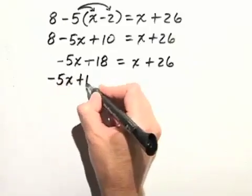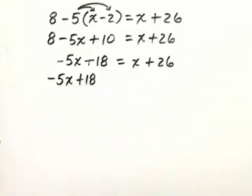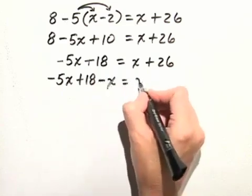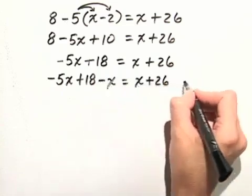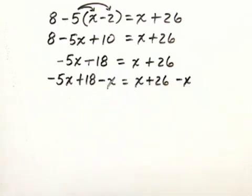Negative 5x plus 18, let's subtract x from the left hand side, equals x plus 26, and we'll subtract x from the right hand side as well.